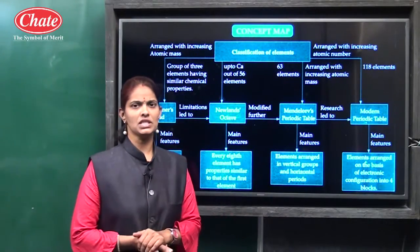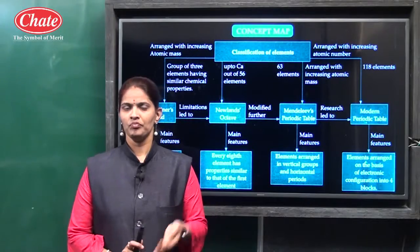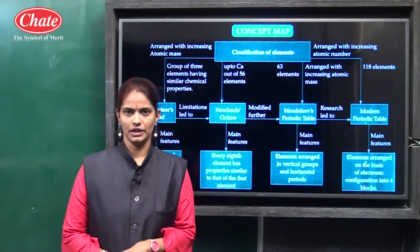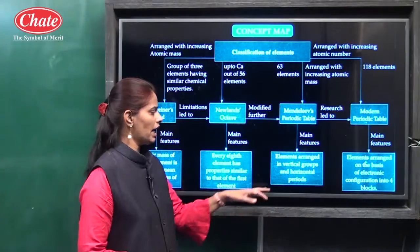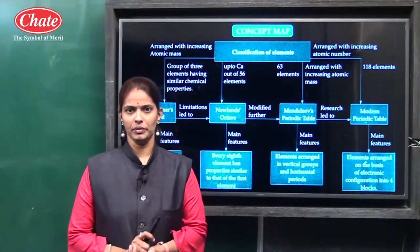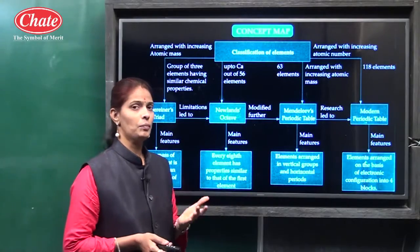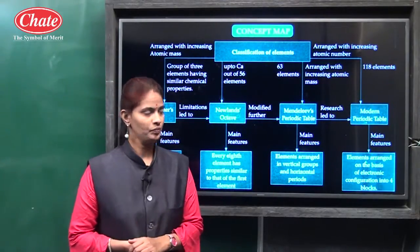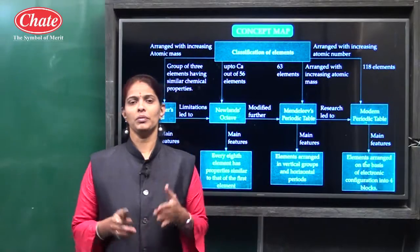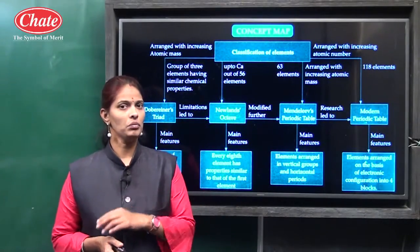There are also limitations in Mendeleev's table. He could not give a fixed position to hydrogen, because hydrogen resembles halogens as well as alkali metals. The isotopes could not be given a proper position in the Mendeleev periodic table. There was also confusion for placing cobalt and nickel. So Henry Moseley suggested the proper periodic function of the elements is the atomic number, not atomic mass.